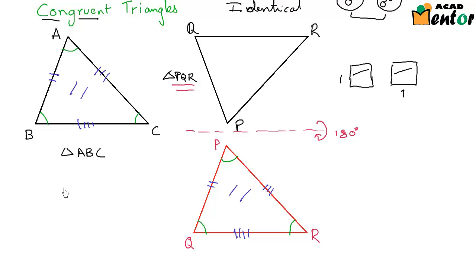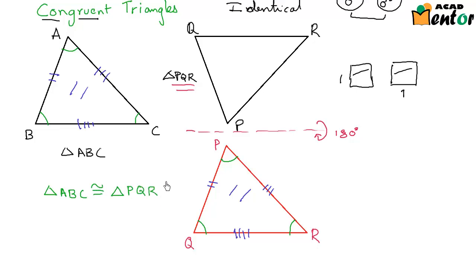So I can say triangle ABC is congruent to triangle PQR. Now there are certain things I want to tell you about this particular relationship.